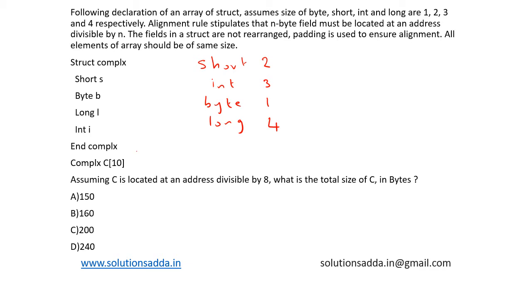So what will be the value of c of 10? And assuming that c is located at an address that is divisible by 8, the total size of c in bytes are given in the options. So the total size of this structure is 1 plus 2 plus 3 plus 4 which is 10 bytes.